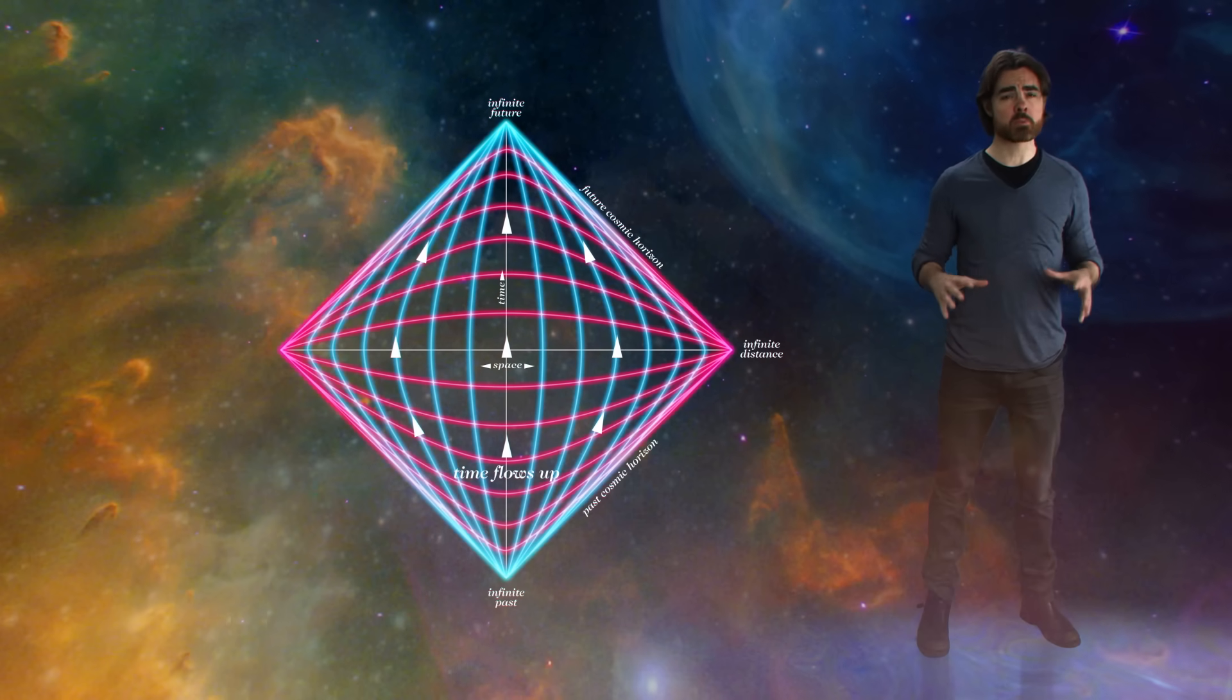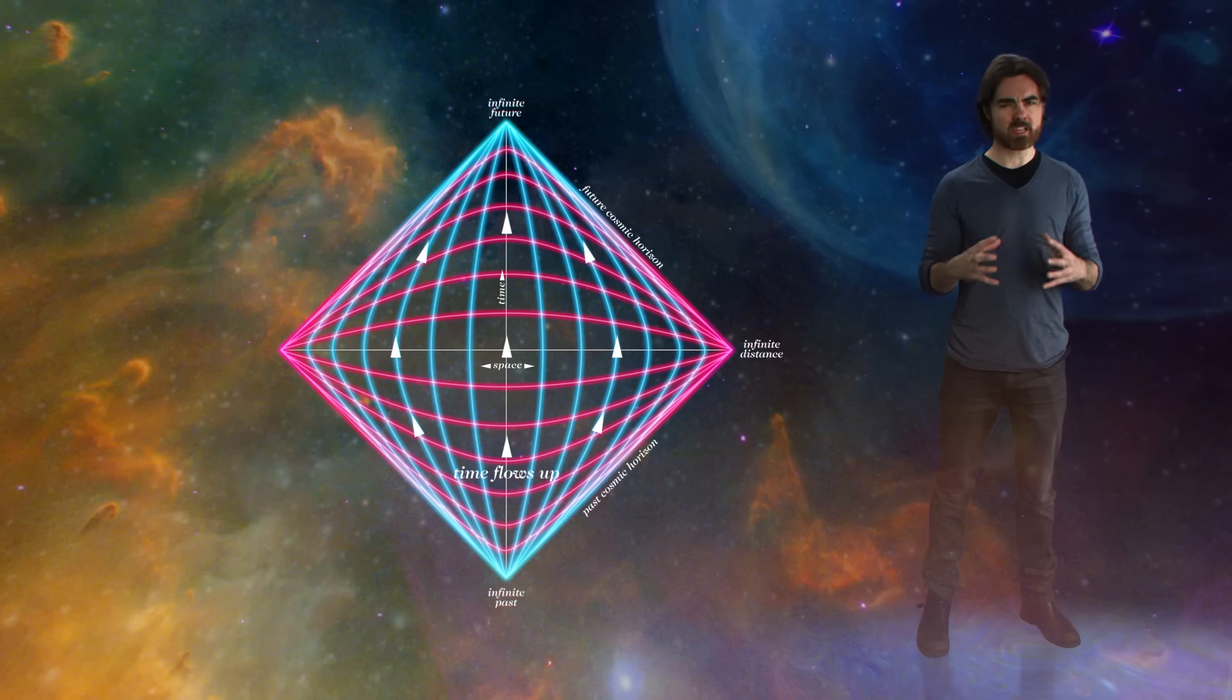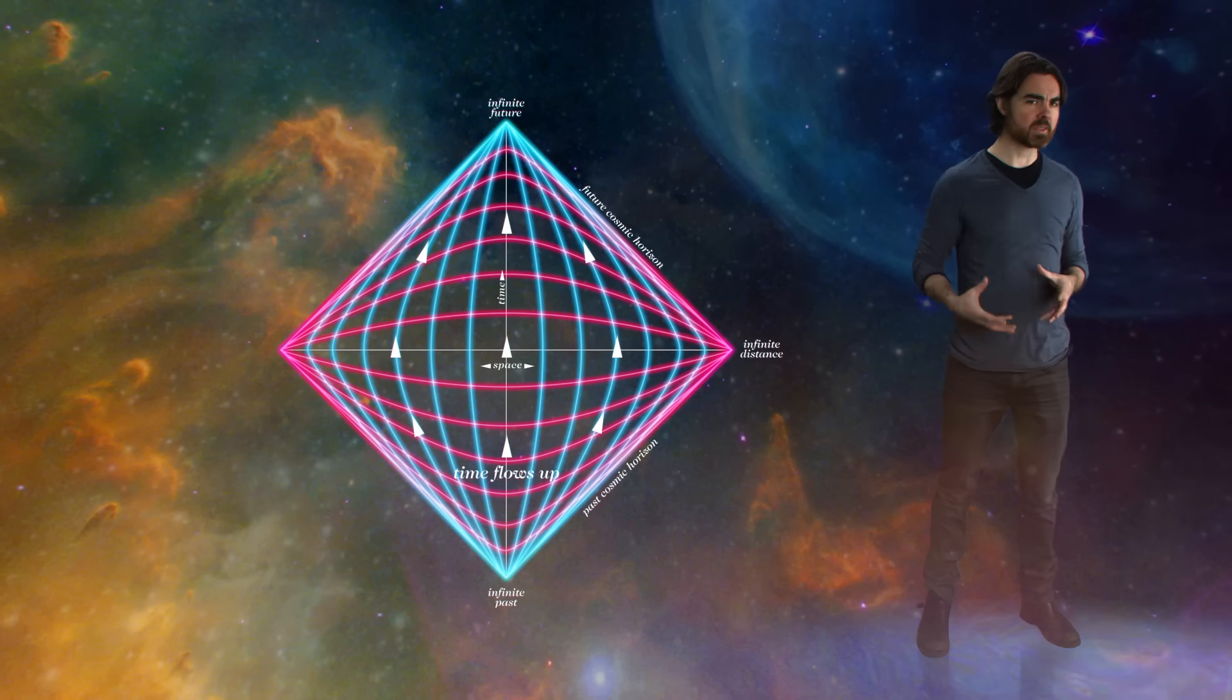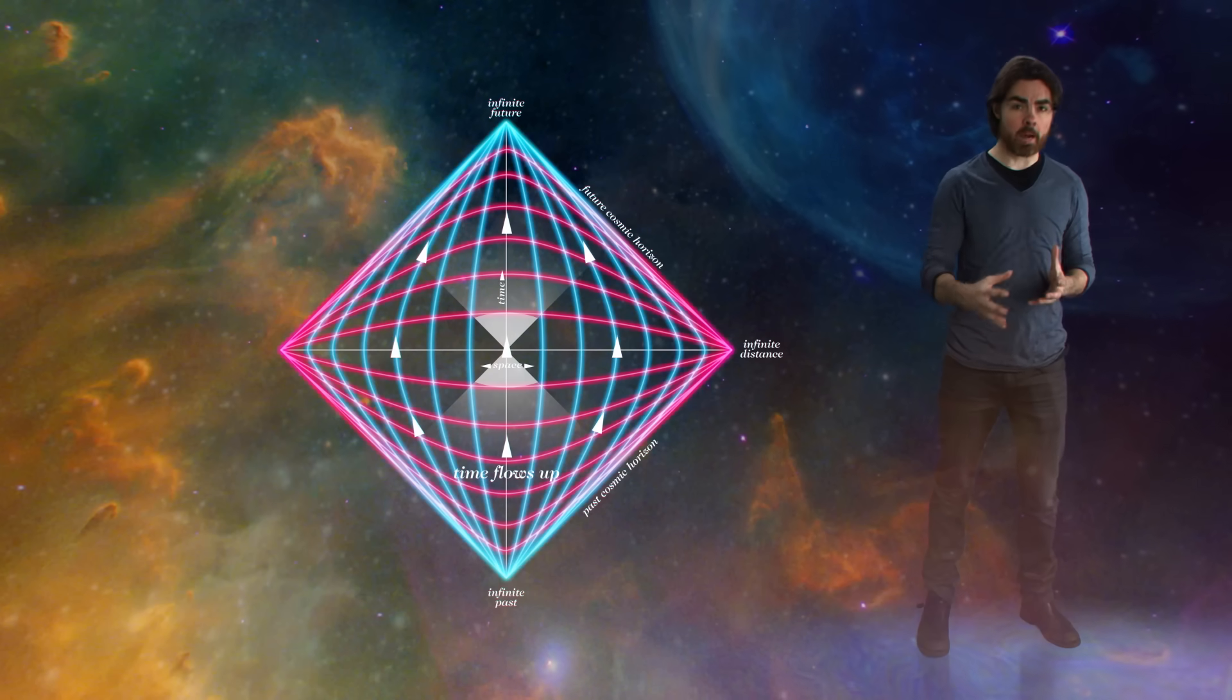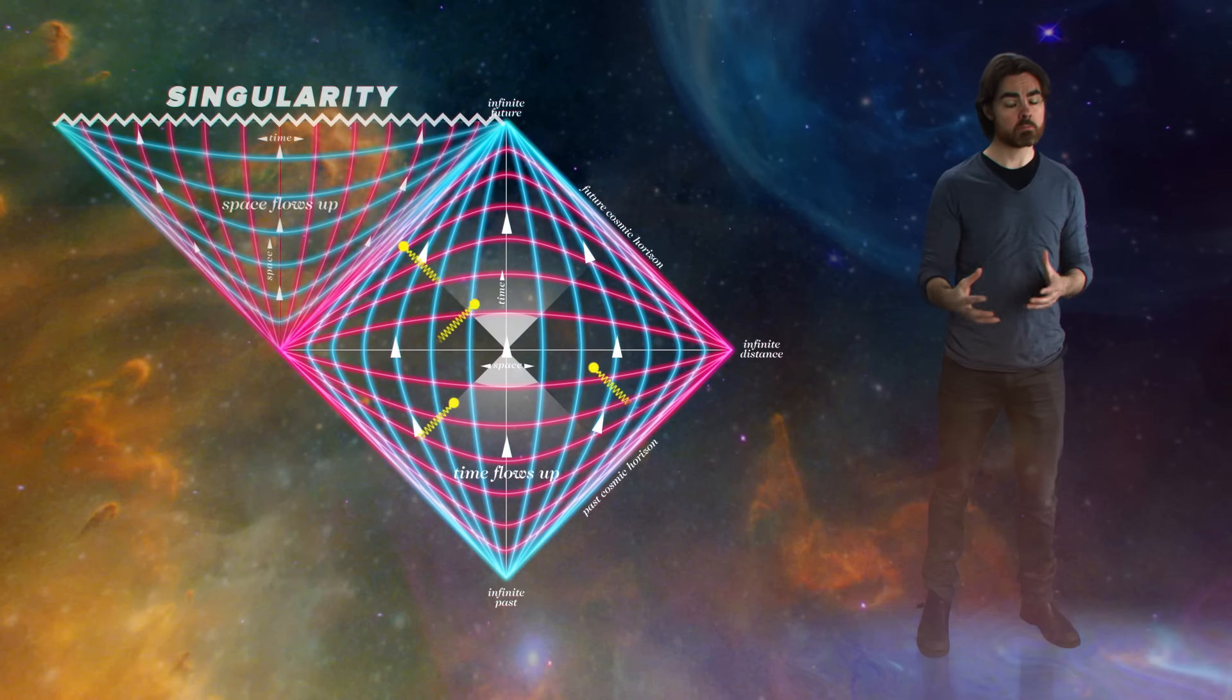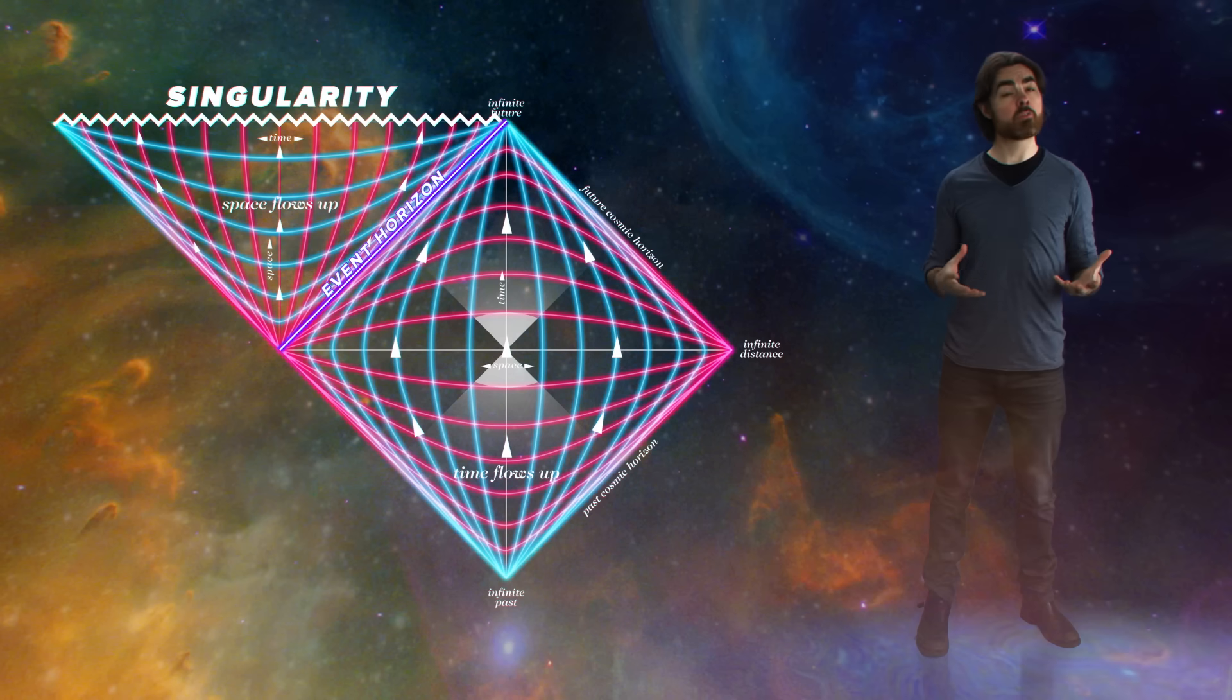Close to and within the black hole, the Penrose diagram is much more useful. It deals with the extreme stretching of space and time by compactifying lines of constant space or time close to its boundaries. We talked about these diagrams previously, but an important thing to remember is that the lines of constant space and time are curved so that light cones remain upright, and light always travels at a 45 degree angle, even inside the black hole. This entire diagonal line represents the event horizon.